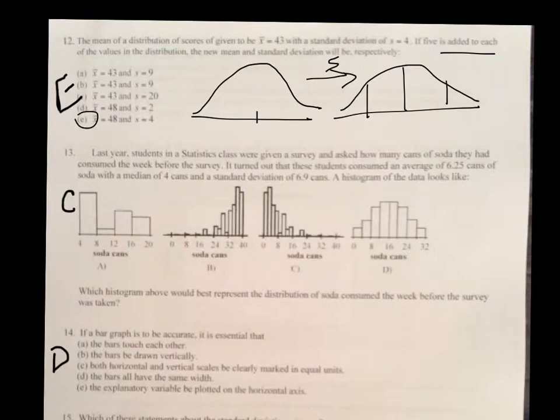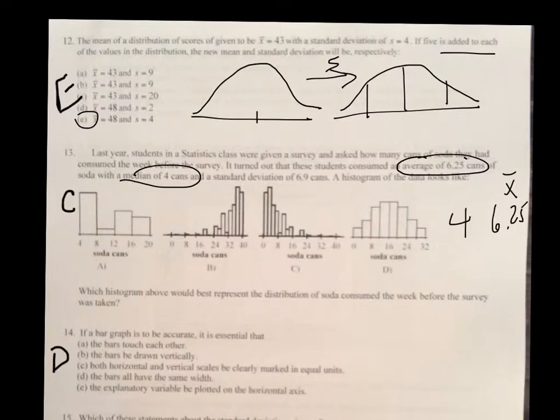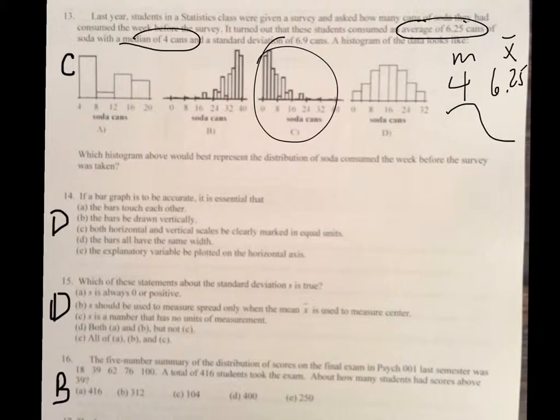On number 13, it turns out that these students consume an average of 6.25 and a median of four. Well, if you have a median of four and 6.25, that means the X bar is going to be to the right of the median, and that means skewed right. So, the one that's skewed right is C. On number 14, it says, if the bar graph is to be accurate, you've got to make sure that all the bars are the same width. That's why D is the answer.